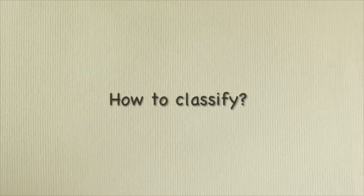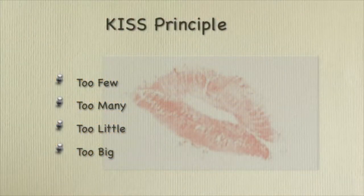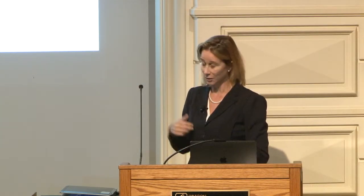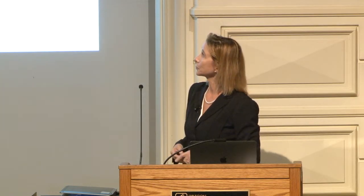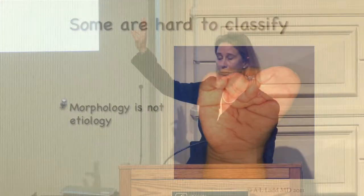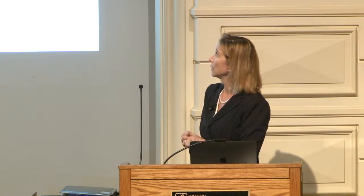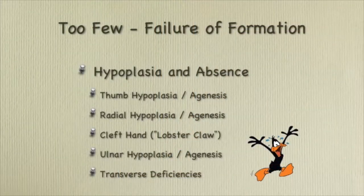How do you classify these? The more you look, the more you learn, and the more they don't fall into anything. This was the international classification I used when I first started practice, but it means nothing — you can't interpret anything from it. So I've gone to the KISS principle: too few, too many, too little, too big. They don't ask where they fall in the classification scheme — it tends to be morphologic or functional. Some cases just cannot be classified, like bilateral hands in identical twins with complex polysyndactyly — it falls into nothing morphologic, and probably involves genetics we don't have answers to yet.